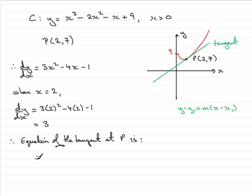And what we've got is, therefore, we have y minus y1, y1 is 7, equals m, the gradient of the tangent, which is 3, multiplied by (x minus x1). x1 is going to be the x coordinate of P, which is going to be 2.